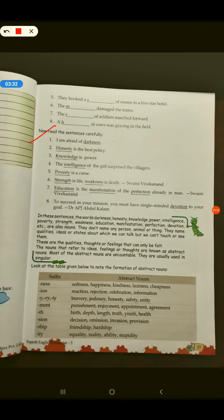Now, let's see what this chapter has to say to us. In these sentences, the word darkness, honesty, knowledge, power, intelligence, poverty, strength, weakness, education, manifestation, perfection, devotion, etc. are also nouns.